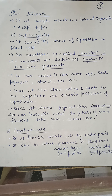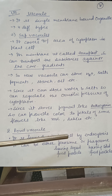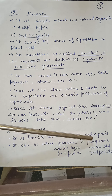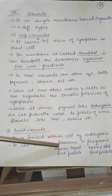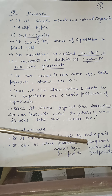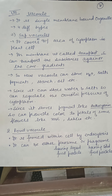The food vacuole is formed inside the cell by endocytosis. When the cell engulfs something solid, it is known as phagocytosis; when it takes in liquid, it is known as pinocytosis. The food vacuole can either be a pinosome, containing liquid food particles, or a phagosome, containing solid food particles.